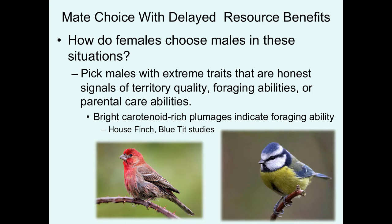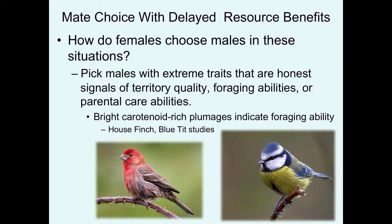Those are some examples where females choose their mate based upon immediate resources on offer — nuptial gifts. What about cases where female mate choice is associated with delayed resource benefits? What females typically do is pick males with the most extreme traits, because these extreme traits are honest signals of some resource they're eventually going to get access to, like a high-quality territory, or mating with males with really good foraging abilities that can translate into good parental care and delivery rates for their young.